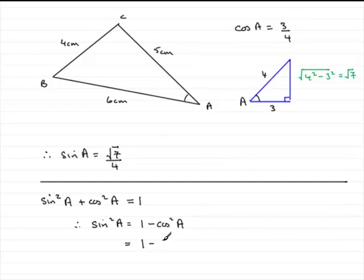So we could say this is 1 minus 3 quarters all squared. And if you do that calculation, what you've got is 1 take away 9 sixteenths, which is 7 sixteenths.